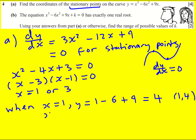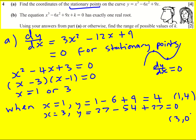And then when x is equal to 3, y is equal to 27 minus 6 times 9, which is 54, plus 9 times 3, which is 27, and that gives 0. So that gives me (3, 0), and those are my stationary points.